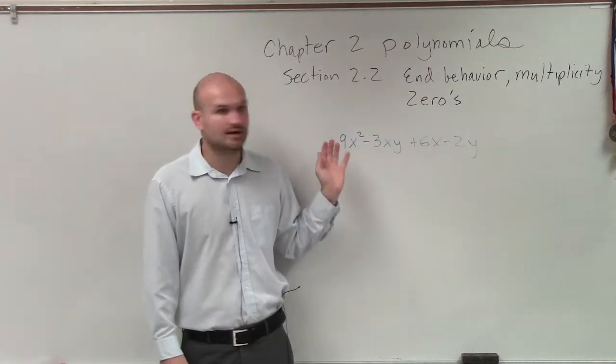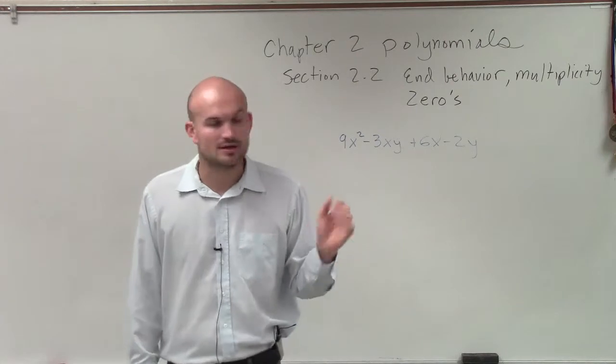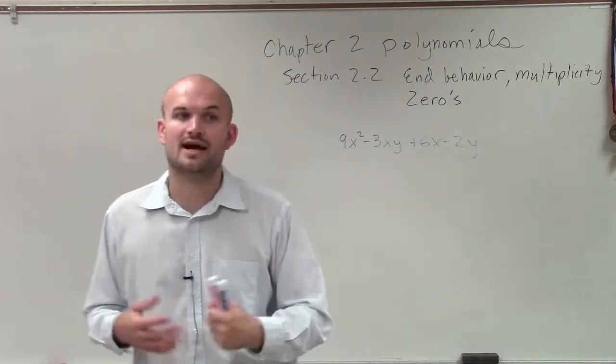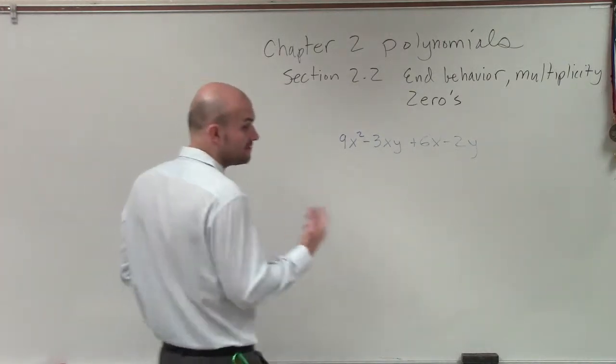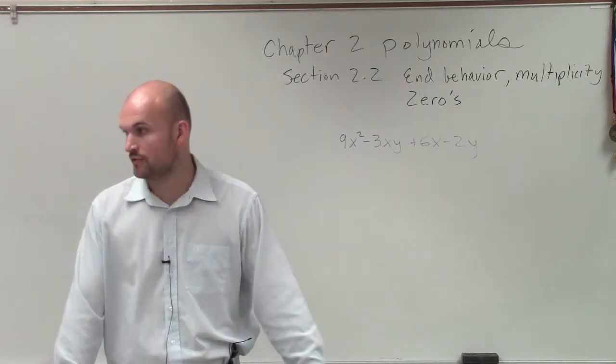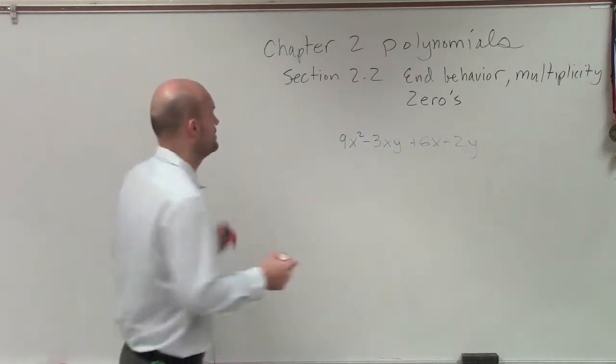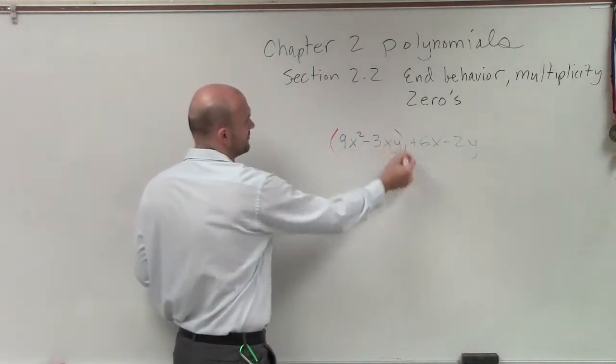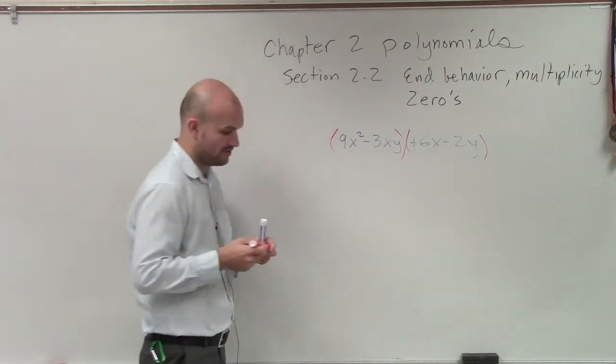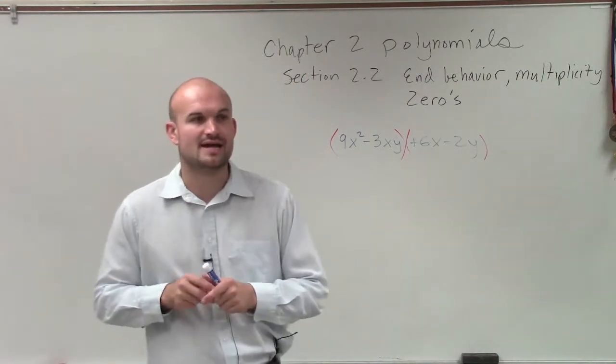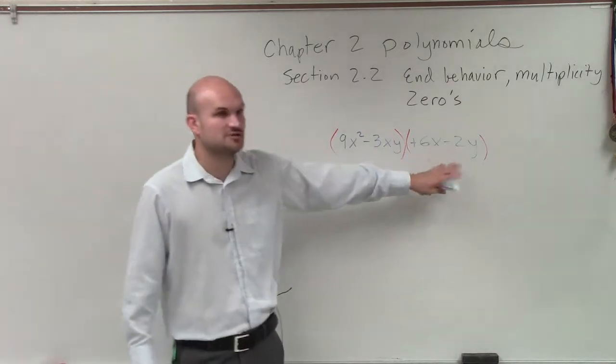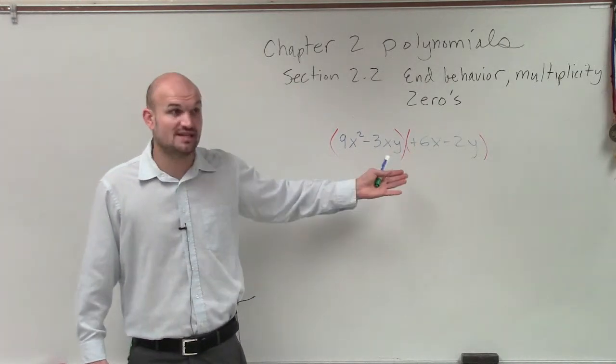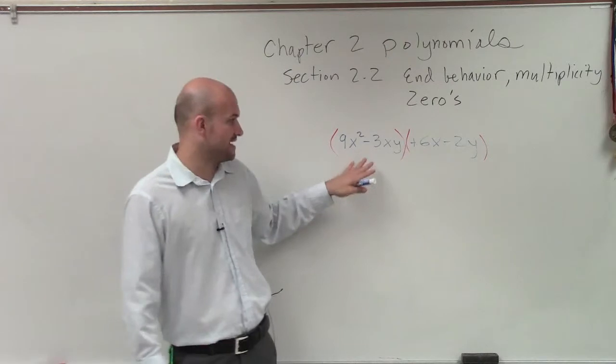But out of all these four terms, I don't see a greatest common factor. So then the next thing I want to look into is can I factor this by grouping? And factoring by grouping is going to be very helpful for your homework tonight. So what we do is we group the first two terms and group the last two terms. What's helpful is because now we take the first two terms and the last two terms, and we factor out the GCF, or see if there is a GCF we can factor out.